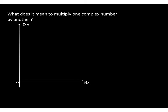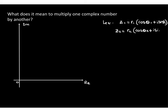We're going to start off by thinking about what it actually means when you multiply one complex number by another. Consider complex numbers z1 = r1(cos θ1 + i sin θ1) and z2 = r2(cos θ2 + i sin θ2), both presented in modulus-argument form. Let's think about what z1 would look like on our Argand diagram — you can think of it a little bit like a vector. So there's z1, there's r1, and there is θ1.